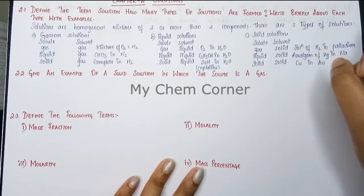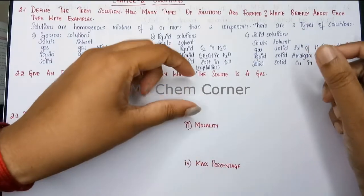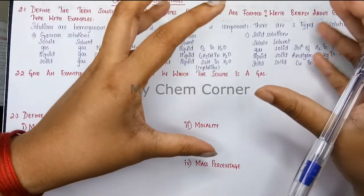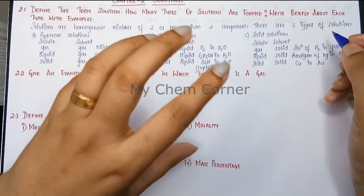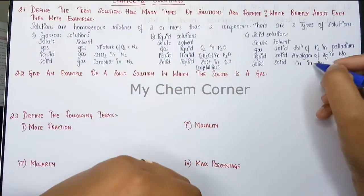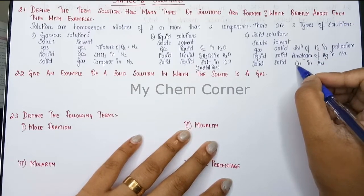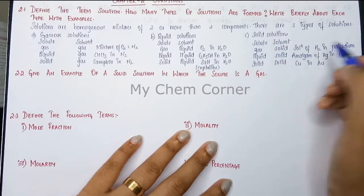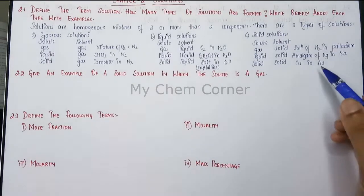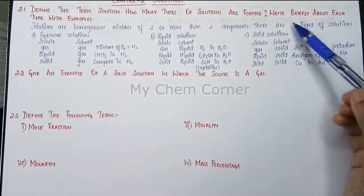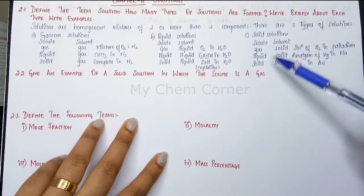When both solute and solvent are solids, the example is copper in gold. Pure gold is very weak and bends or breaks easily, so copper is added to gold ornaments to increase strength. When copper and gold are melted together, you get a solid solution where both solvent and solute are solids. This covers all three types of solutions with examples.